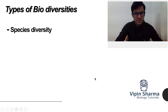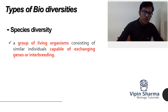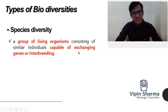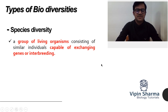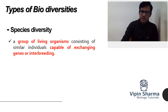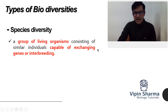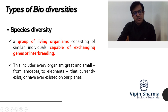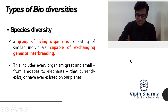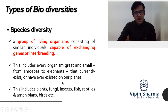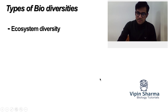The second type is species diversity. A species is a group of living organisms capable of interbreeding, and the variety in this species pool is called species diversity. For example, humans come under Homo sapiens, but dogs, birds, butterflies, and insects are different species. This ranges from the smallest organisms like amoebas and bacteria to the largest like blue whales or elephants. It includes plants, fungi, insects, fishes, reptiles, and amphibians.